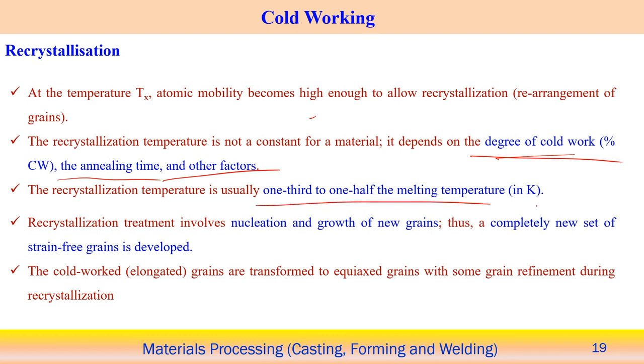Recrystallization temperature is typically one-third to one-half of the melting point temperature of the material. Recrystallization follows two phases: nucleation and grain growth, both occurring in the solid state. Nucleation occurs where dislocation density is very high, crossing a critical value. Once a nucleus forms, it gradually grows into a new grain, eventually developing into completely strain-free grains, which may further grow depending on temperature, strain rate, and deformation conditions.